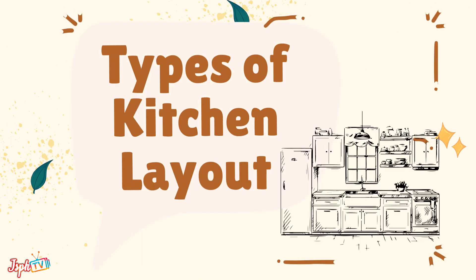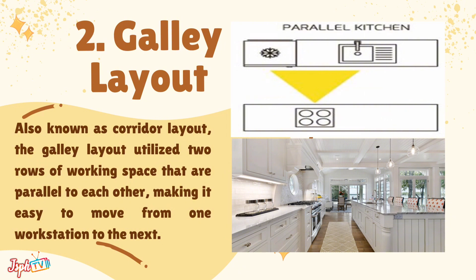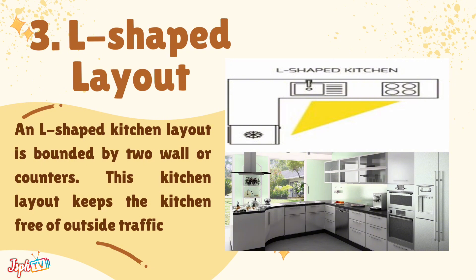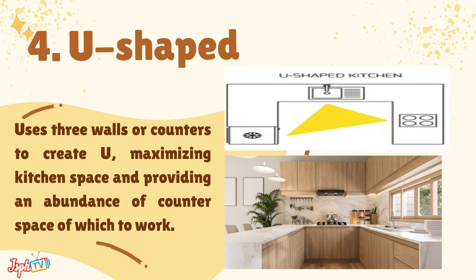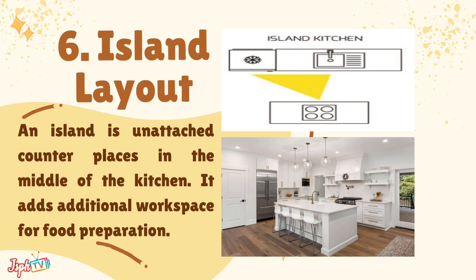We have types of kitchen layout. First, the single line wall layout, where all kitchen counters and appliances are placed in a single line against one wall. The galley layout, also known as corridor layout, utilizes two rows of working space parallel to each other. The L-shaped layout is bounded by two walls or counters. The U-shaped layout uses three walls or counters, maximizing kitchen space and providing an abundance of counter space. The G-shaped or peninsular layout adds a short, low wall to the U-shaped layout. The island layout places an additional counter in the middle of the kitchen, adding extra workspace for food preparation.